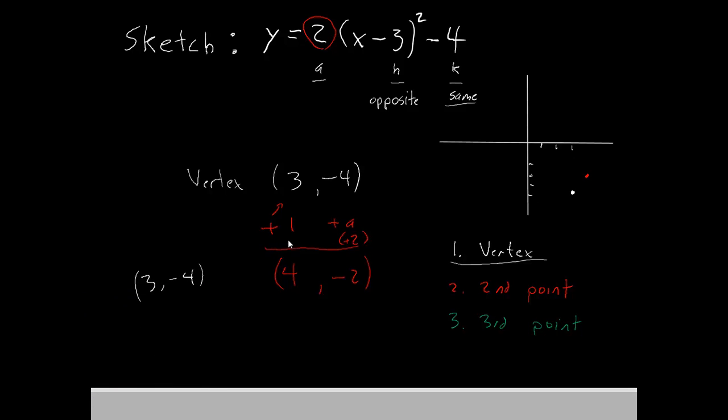And we're going to do something similar to what we did last time. Rather than adding 1 to the x coordinate, we're going to subtract 1. However, we will still add a to the y coordinate, which again is 2. So 3 minus 1 is 2. Negative 4 plus 2 is still negative 2. We can plot that point as well, go over 2 and down 2. There's our third point.